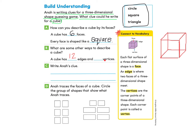Now let's take a look at the word vertex. The vertices are the corner points of a three-dimensional shape, and each corner point is called a vertex. We're going to use a different color here. Right here is a vertex — the corner point of the three-dimensional shape. When we have more than one, we call them vertices. You can follow along or try this on your own — let's put a dot on all those corners.